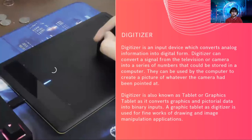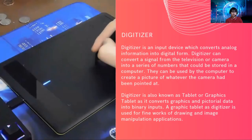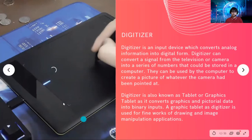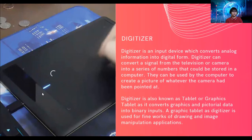Next, we also have the digitizer. The digitizer is an input device which converts analog information into digital form. A digitizer can convert a signal from the television or camera into a series of numbers that could be stored in the computer, used to create a picture of whatever the camera had been pointed at. A digitizer is also known as a tablet or graphics tablet, as it converts graphics and pictorial data into binary inputs. A graphics tablet is also used for fine drawing and image manipulation applications.